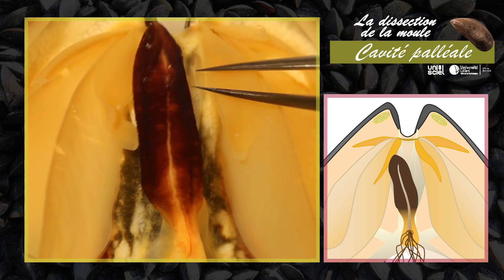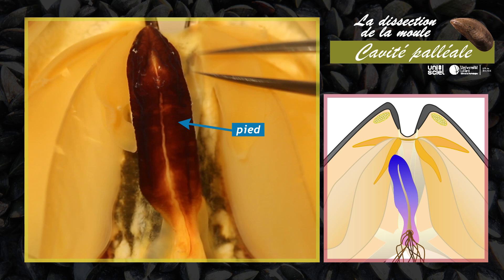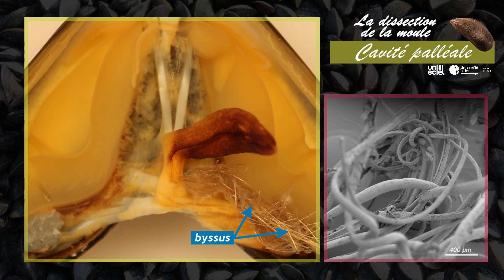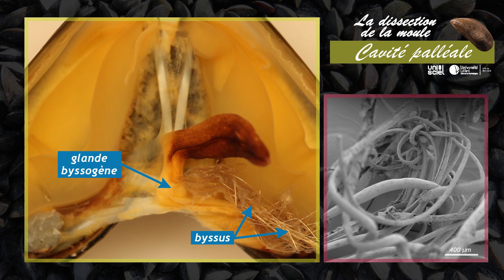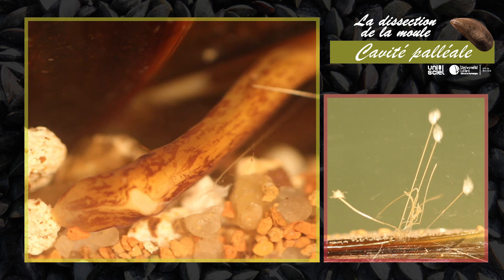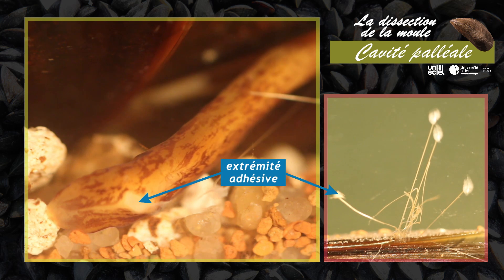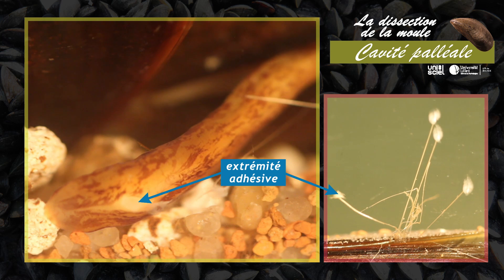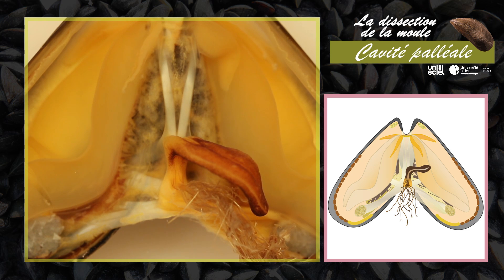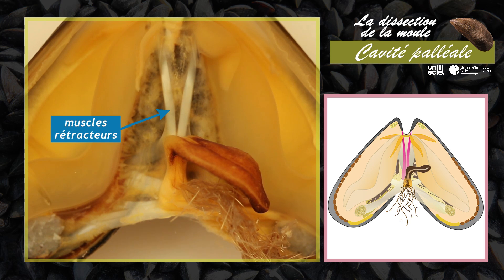En position médiane est visible le pied musculeux de couleur brune. Il présente un sillon postérieur longitudinal. Les filaments d'ancrage de l'animal, le bissus, sont sécrétés par la glande bisogène située à la base du pied. Le pied positionne sur le support les filaments nouvellement formés et pourvus d'une extrémité adhésive. Les mouvements du pied et du bissus sont assurés par des muscles qui s'insèrent le long de la charnière dorsale de la coquille, situés en avant et en arrière du pied.